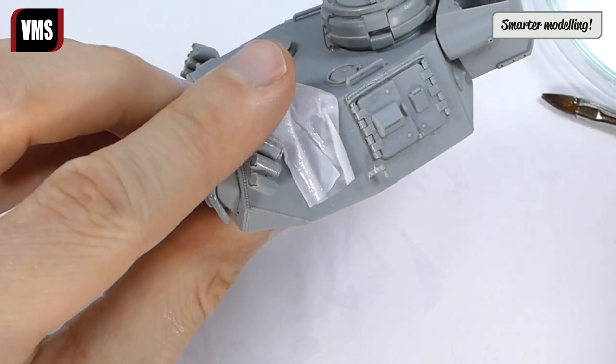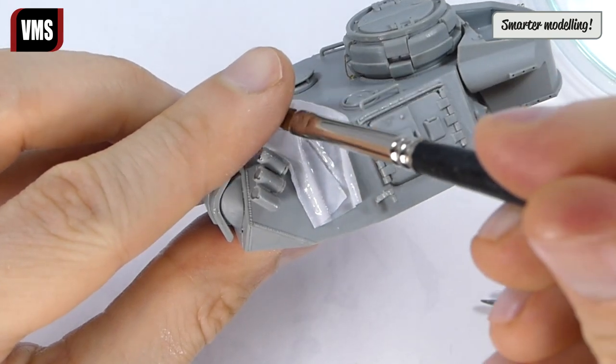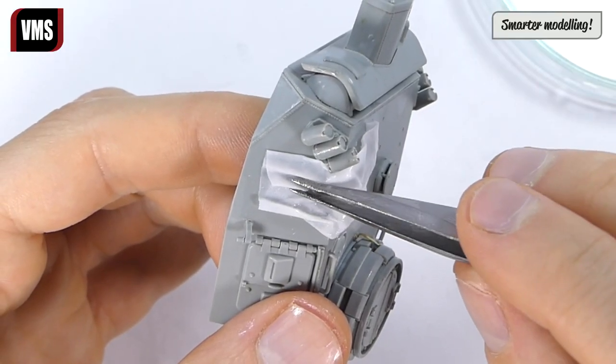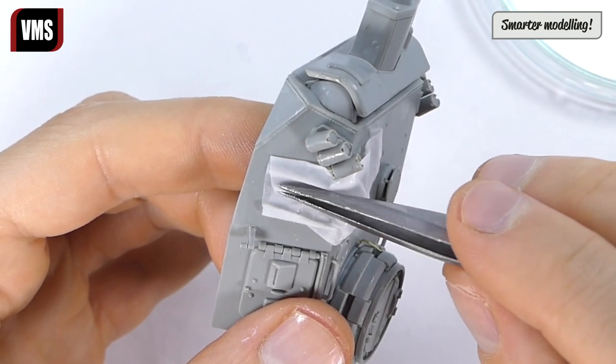If your fingertips stick to the paper, simply wet them with more fluid to disengage. While making folds with tweezers, be careful—don't tear the paper.